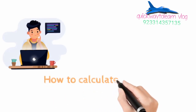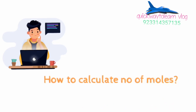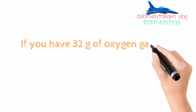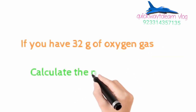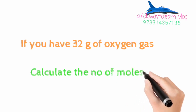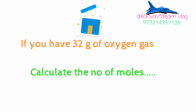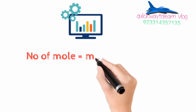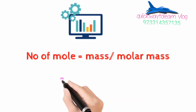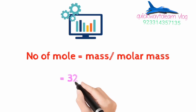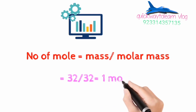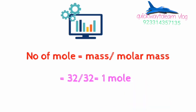To calculate the number of moles of a substance, consider this example: if you have 32 grams of oxygen, calculate the number of moles. The formula is: number of moles = mass ÷ molar mass. The mass is 32 g and the molar mass of O₂ is 32, so we have one mole of oxygen gas.